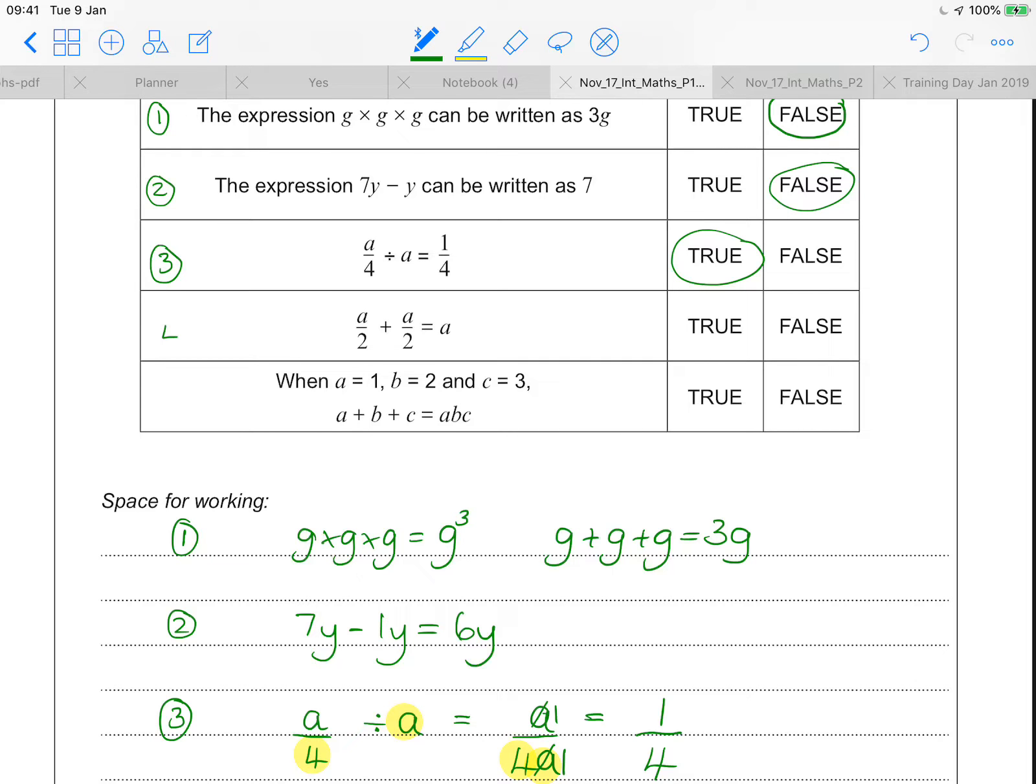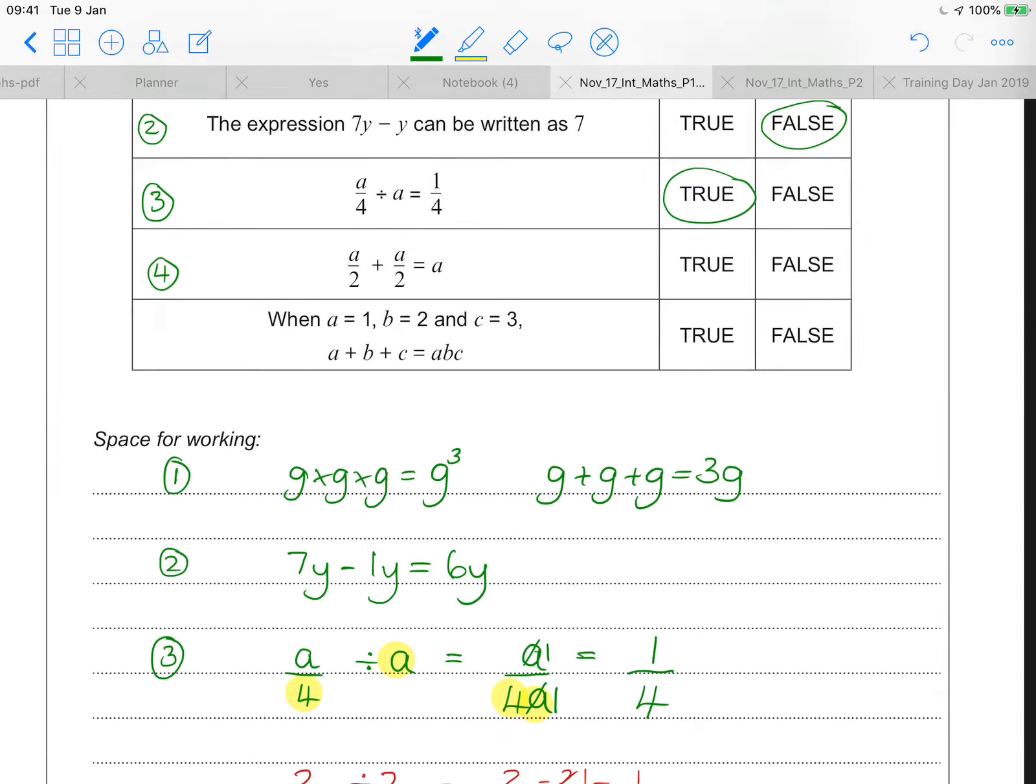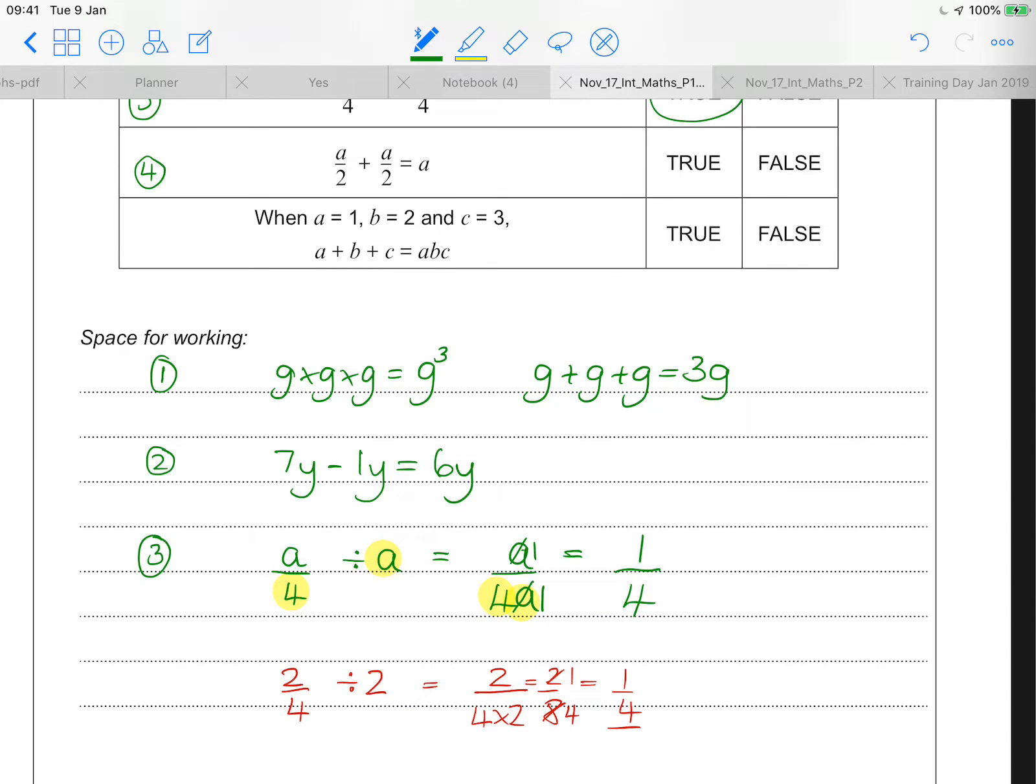Question 4. A divided by 2 is the same as half a. So in question 4, a divided by 2 is half a. A divided by 2 is another half a. If I put two halves together, I do go back to a whole a. So that makes perfect sense.